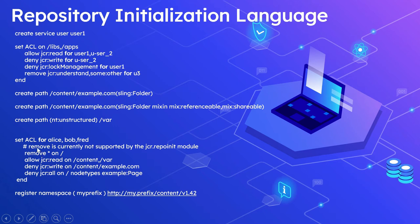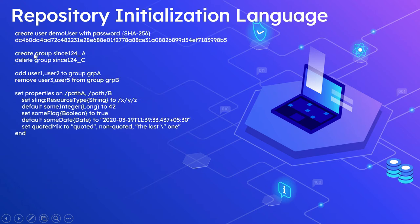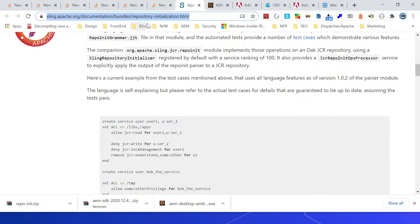Then setting ACL based on users — specifying the user, then specifying the path, what path we are allowing and denying. We can also register a custom namespace, create users and groups, then assign or remove users from a group, and set properties on specific nodes. Any properties you can set on a specific node.